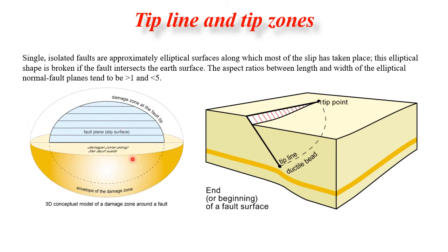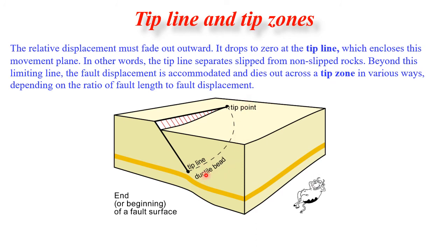The fault plane is the slip surface; the damage zone at the fault tip contains the tip point and tip line. The fault begins and ends at this elliptical surface. The tip line and tip zone are important: relative displacement fades outward, dropping to zero at the tip line, which encloses the movement plane. The tip line separates slipped from non-slipped rocks — beyond the limiting line, fault displacement is accommodated and dies out across a tip zone.